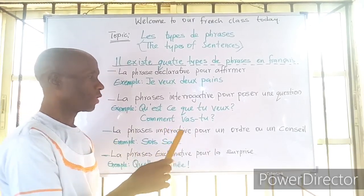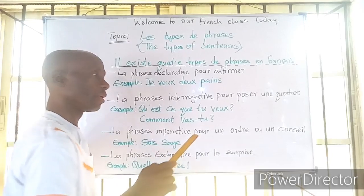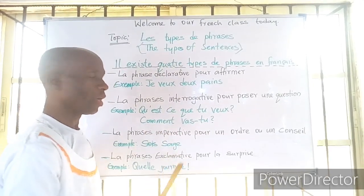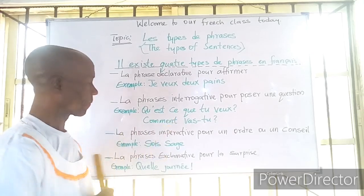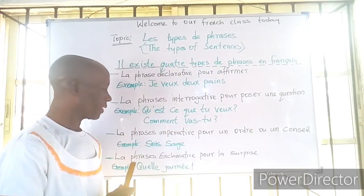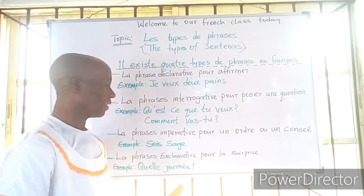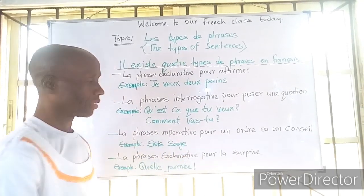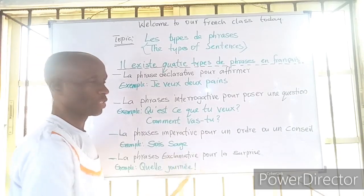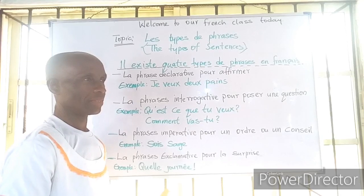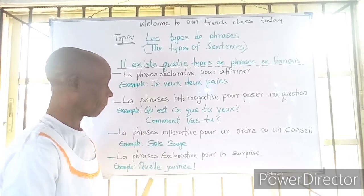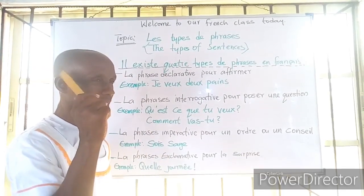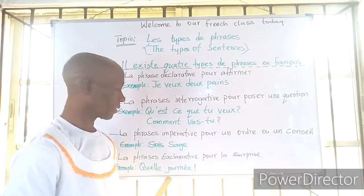The third one is la phrase impérative pour un ordre ou un conseil. With this you can give an order or give somebody advice. For example: 'Sois sage.' This word can mean many things — be wise, be intelligent, be connected. It has many ways to express this.